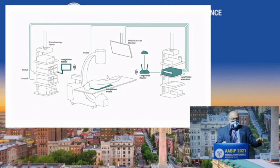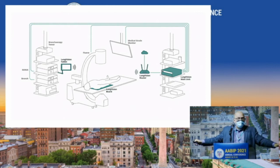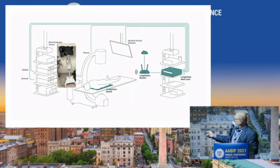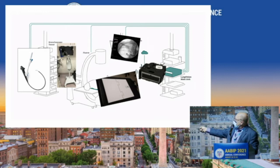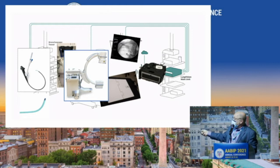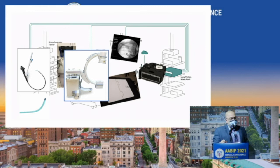Here's a typical setup in a bronch suite. Lung Vision is basically a tablet, a board, a router that sends data to the cloud, and a main unit — that's it. There's the screen on a stand, the board, the main unit with router, the bronchoscope with the Lung Vision catheter, and a C-arm. Lung Vision works with any digital C-arm — 9-inch or 12-inch detector, Siemens, Philips — it doesn't matter. You don't have to buy or borrow a special C-arm.